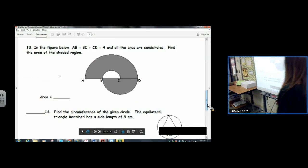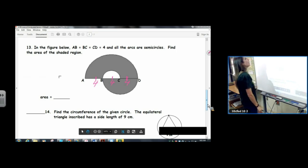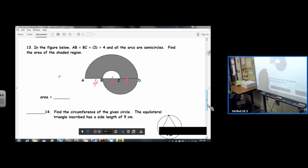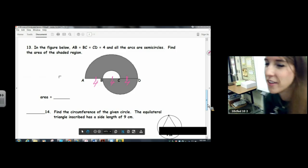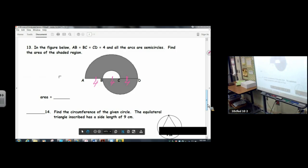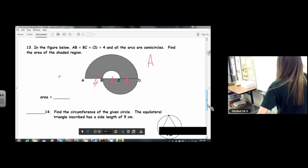All right, number 13. AB equals BC, CD equals 4. So 4, 4, 4, 4. All of the arcs are semicircles. Find the area of the shaded region.